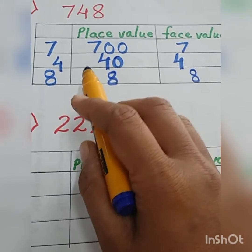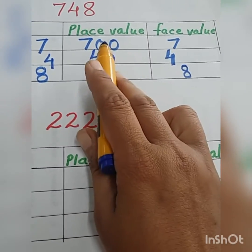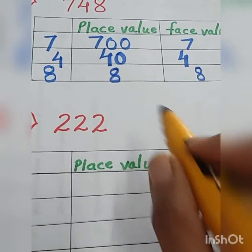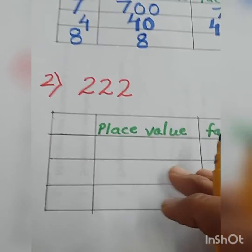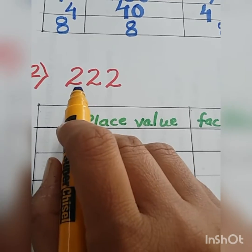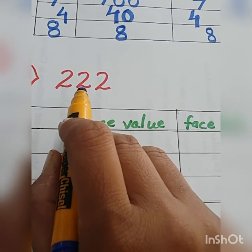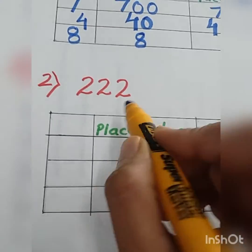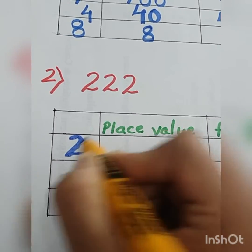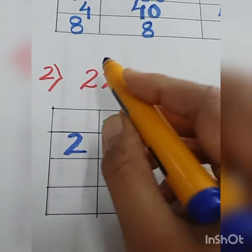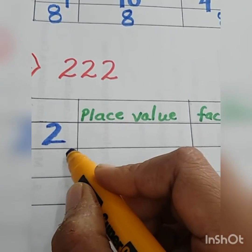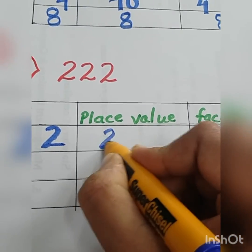So like this we can write the place value and face value of the given digit. Now one more example we will solve — number 222. I want to write the place value of the first 2. It is at hundreds place, so the place value is 200. The face value is the number itself, so I will write 2.